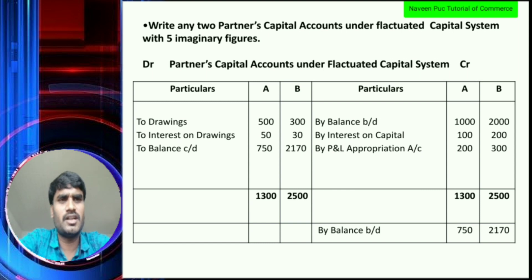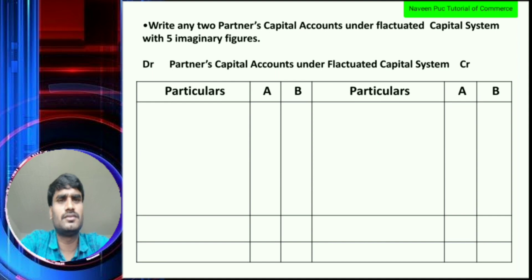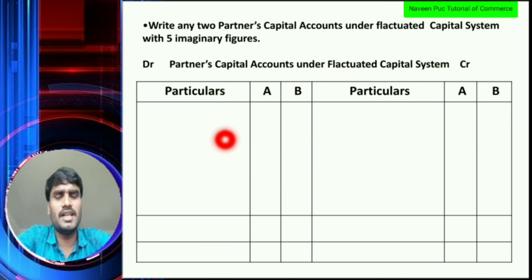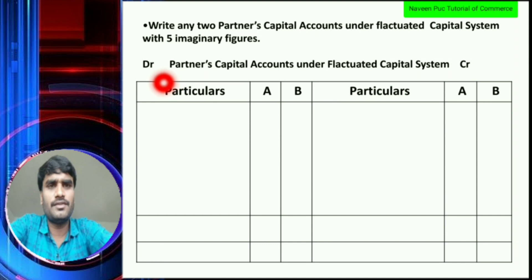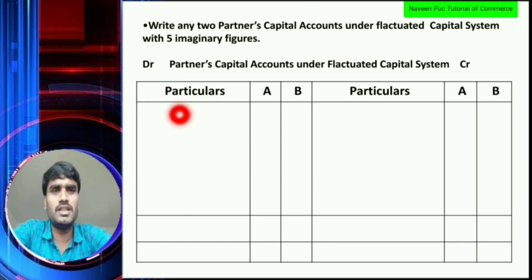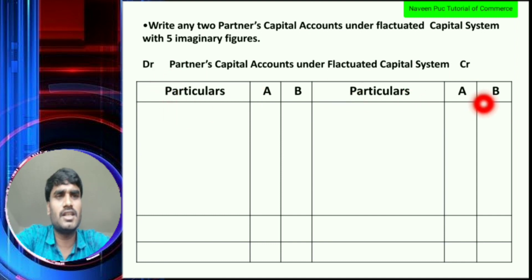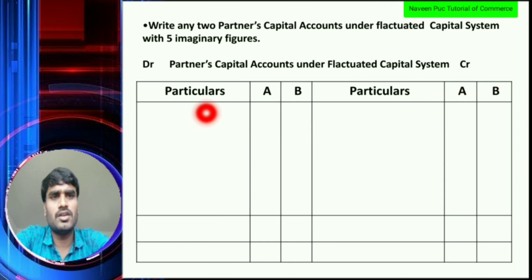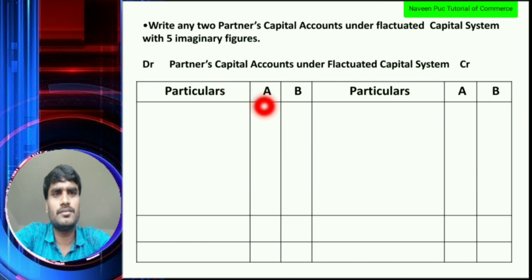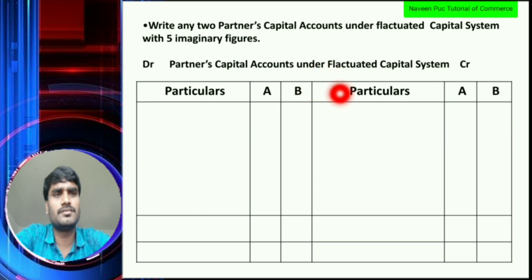This is the format. Left side: debit. Right side: credit. Particular — Partner A, Partner B. Next, right side, credit side: Particular — Partner A, Partner B.